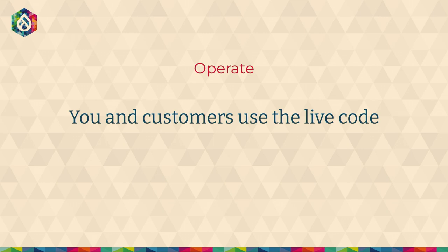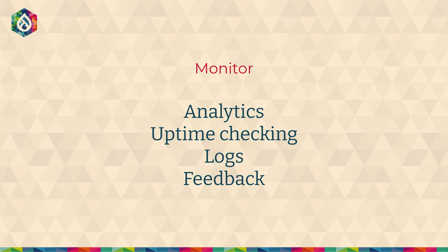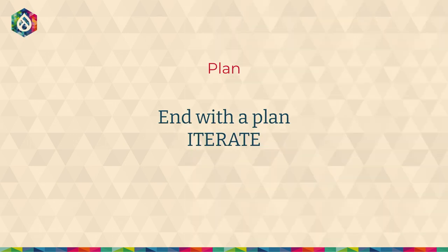Then there's the operate phase — this is where you start using your code on the live site. You've deployed out across whichever environments you have, and now you move to the important spot of monitoring. Maybe you're throwing on Google Analytics, you're going to want some uptime checking to see if your site is staying up, you want logs so you know what's happening. And hopefully there's a way for customer feedback to come back in. The final step is coming back to plan and saying, let's iterate. This thing is a cycle for a reason. One measure of DevOps maturity is how fast you can go through that cycle — the faster you can make that loop, the more you're able to iterate and grow.